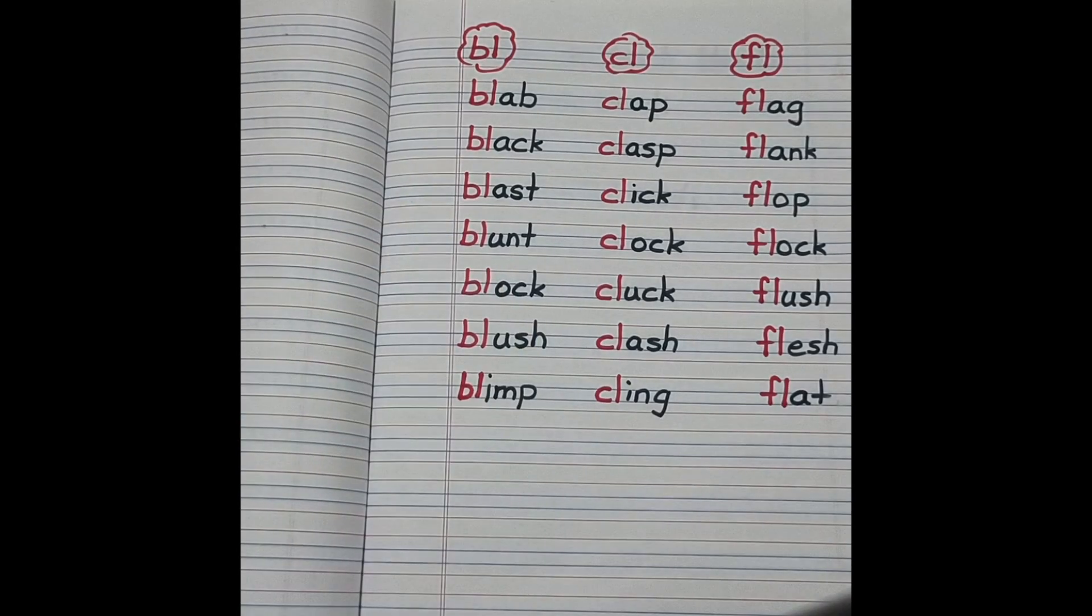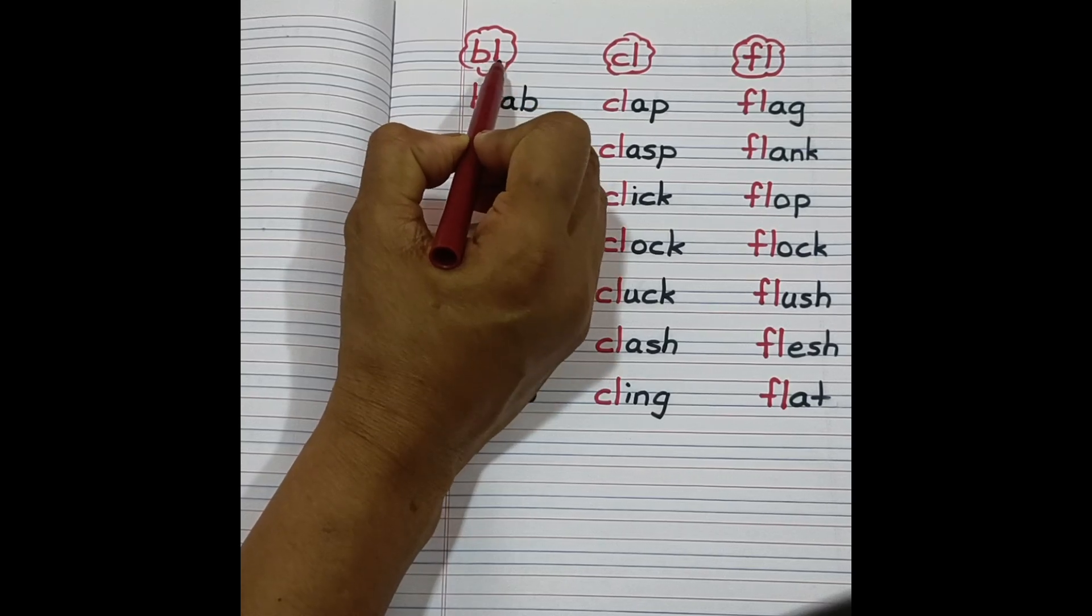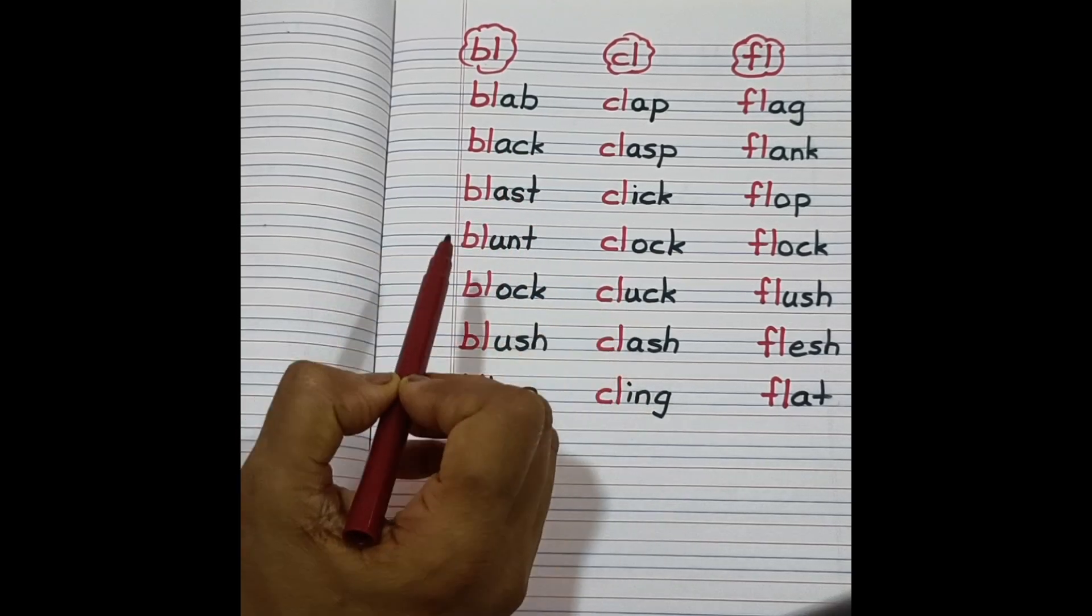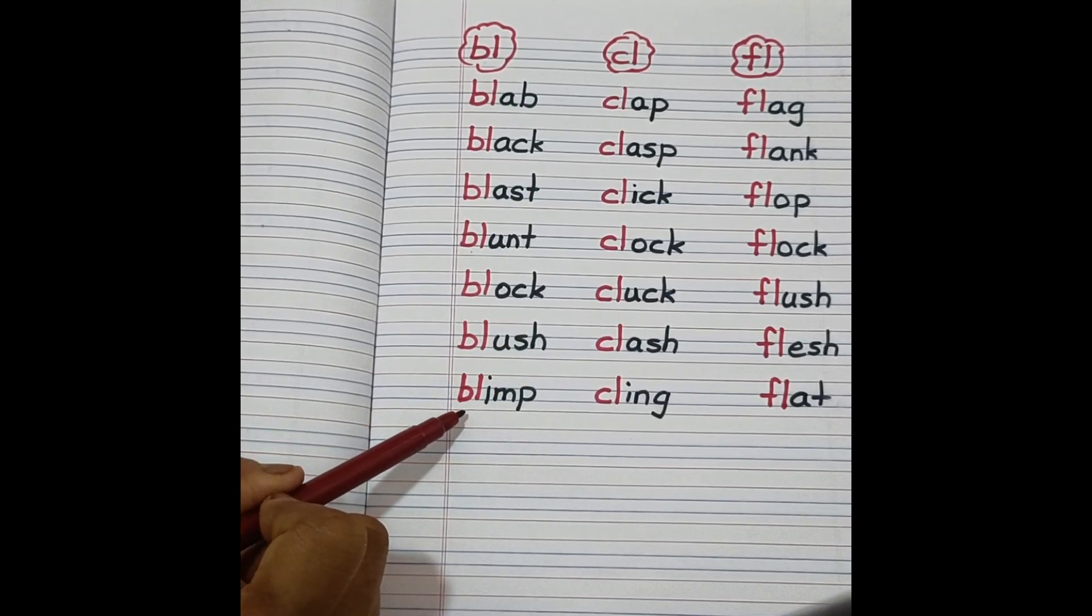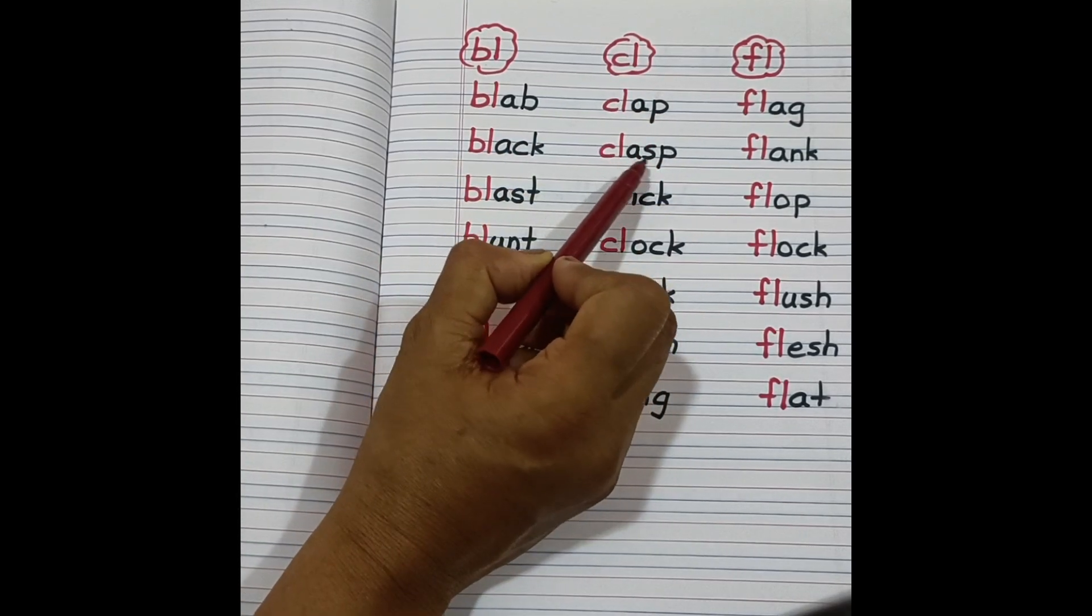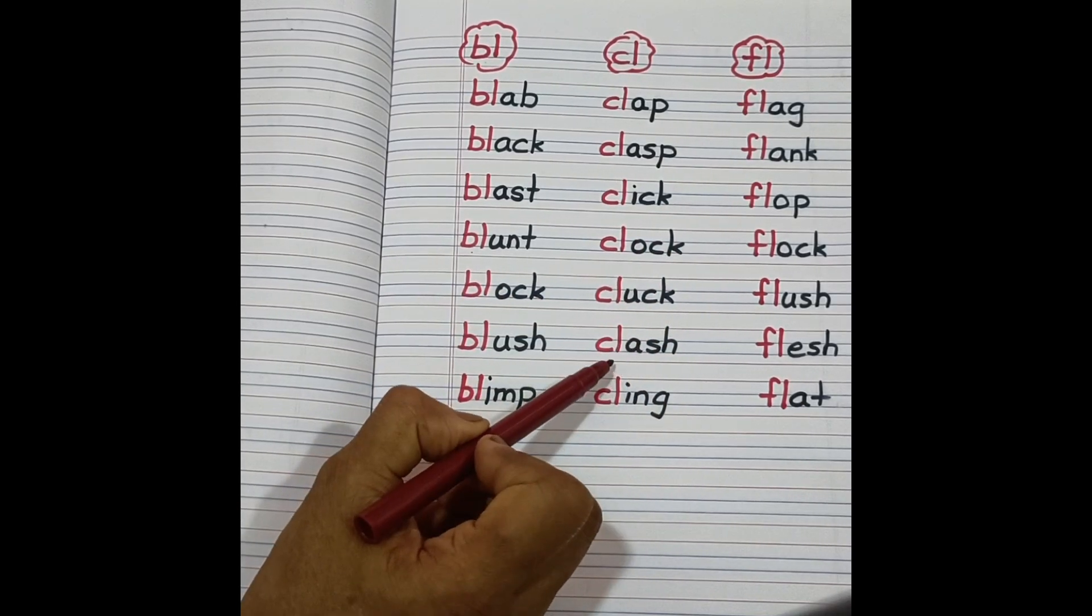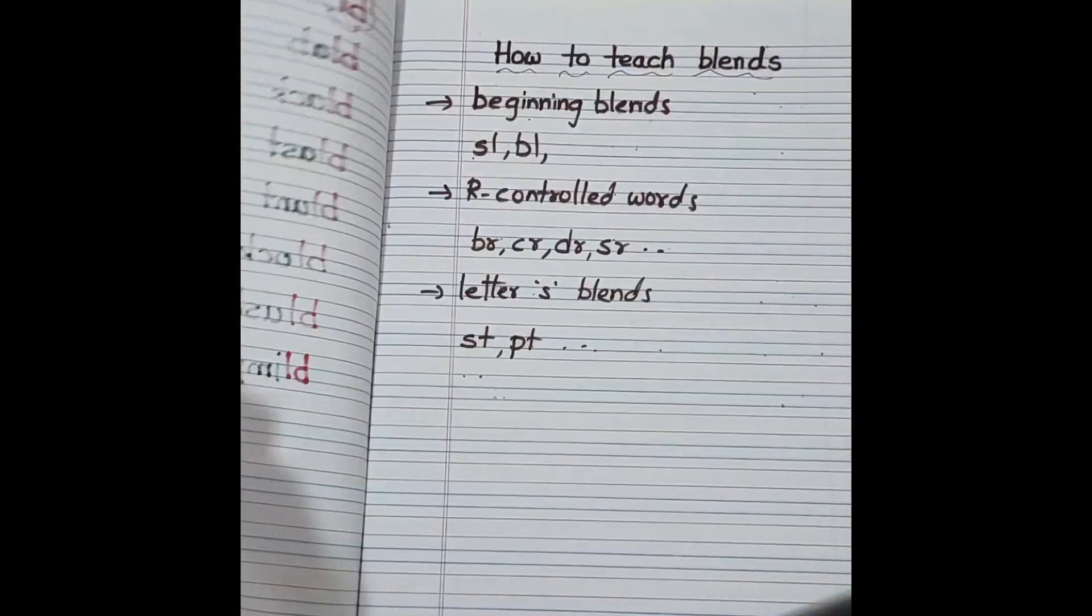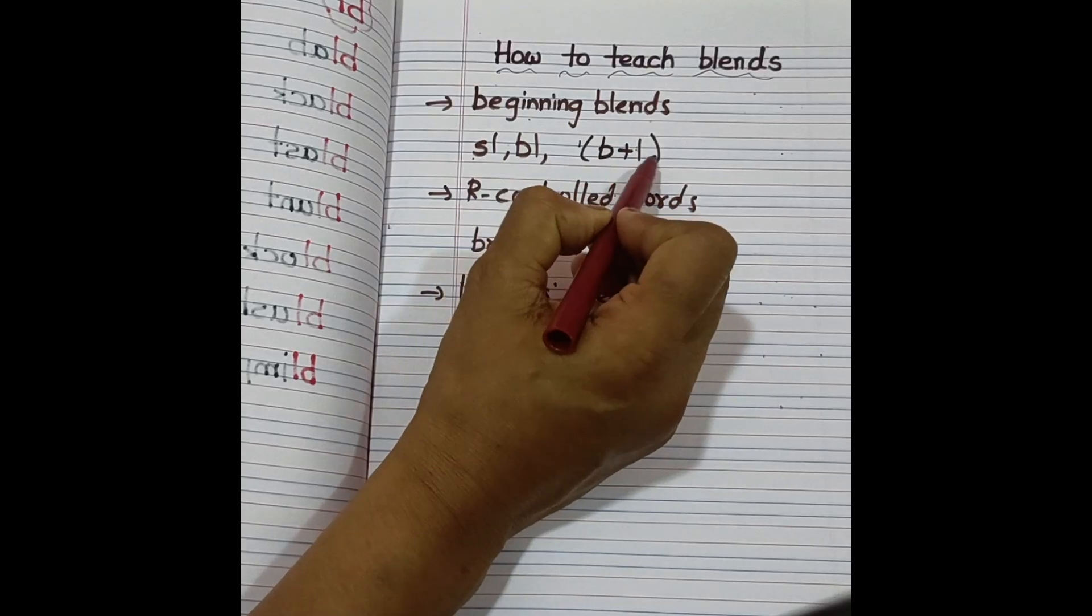How do we read the words of this bl? These mixing together, bl, bl. How do we read bl? Lab, blue, black, bl-act, black, bl-ast, blast, bl-unt, blunt. And so on. So here, bl means b plus l. These two we will read together. Bl, bl. Same way.